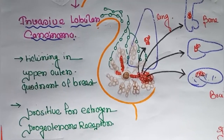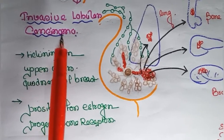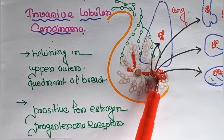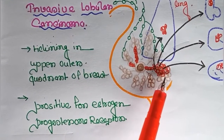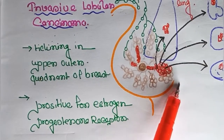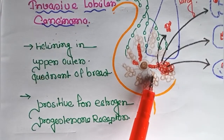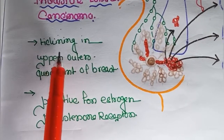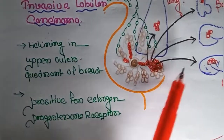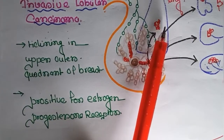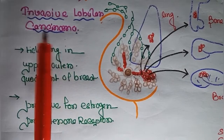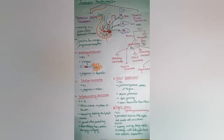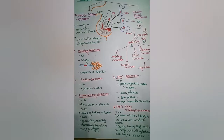Invasive lobular carcinoma begins in the lobules of the breast and can break out of the lobules with the potential to spread to other areas of the body. It typically appears as a thickening in the upper quadrant of the breast. This type of carcinoma is usually positive for estrogen and progesterone receptors.